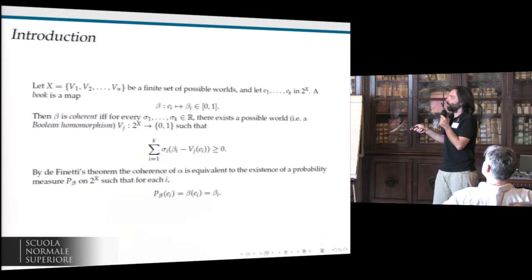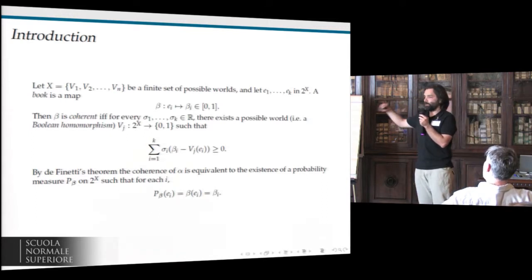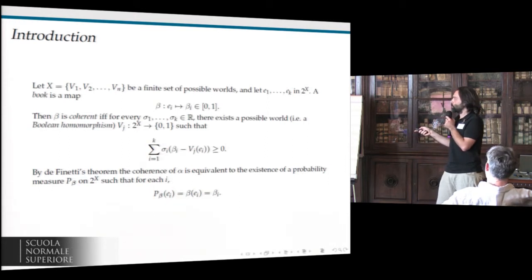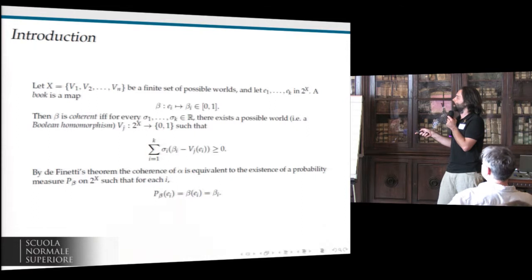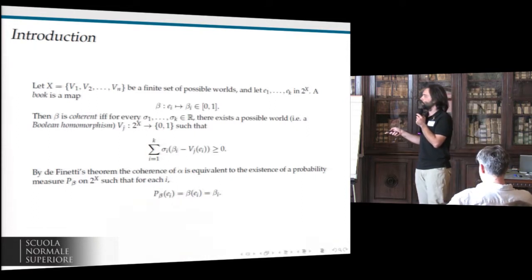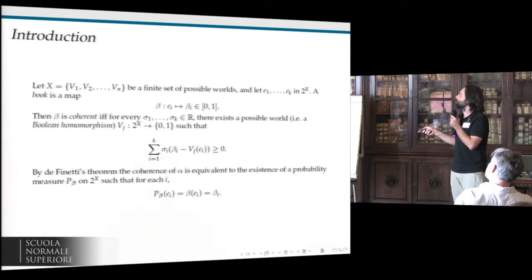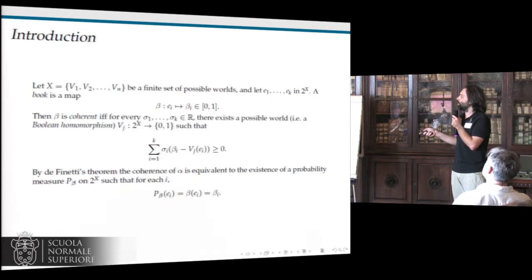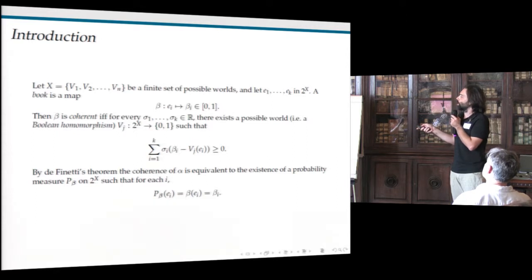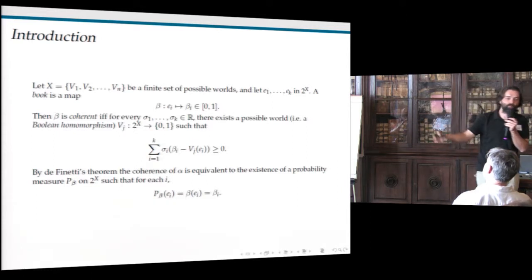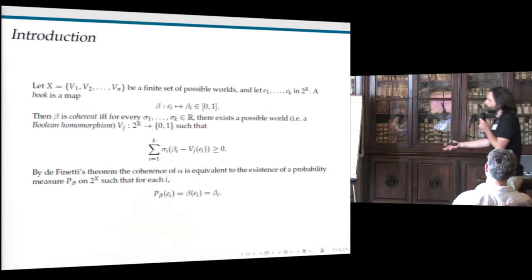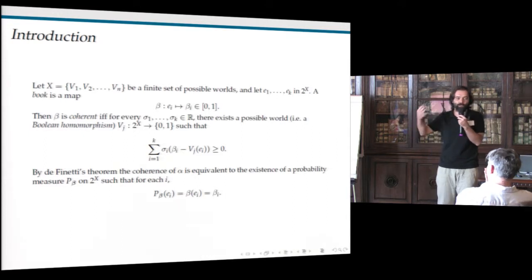The book is coherent if for every stake the gambler can choose for the events, there is a possible world — in this case just the Boolean homomorphism of this Boolean algebra into the two classical truth values zero and one — such that the balance for the bookmaker is not negative. The theorem says that the coherence of beta is equivalent to the existence of a probability measure on the Boolean algebra of events such that this probability extends the assignment. So a book is coherent if and only if the values assigned by the bookmaker are probability values, assigned in a way coherent with the laws of probability theory.